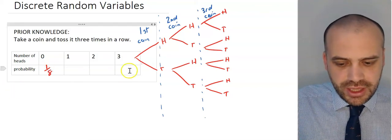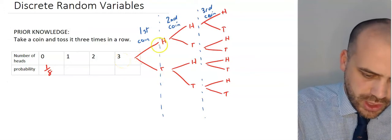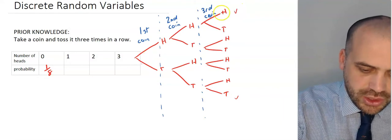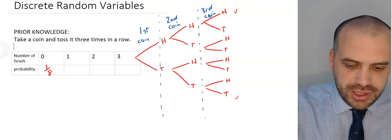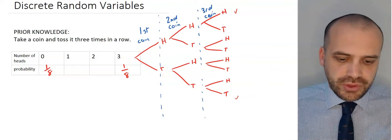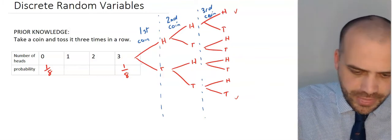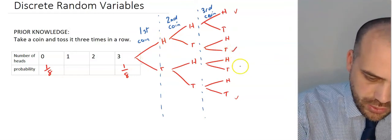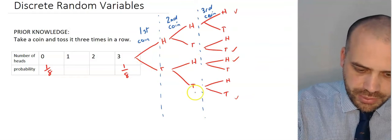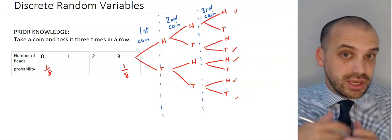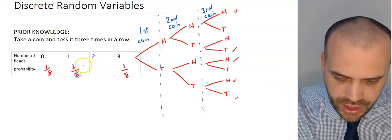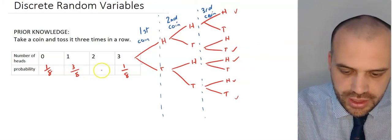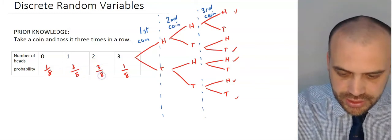The probability of getting three heads — there's only one way to do that, all heads along this line — so the probability is also one in eight. The other two are more interesting. The probability of getting one head happens on three different branches, so that's three in eight. And the probability of getting two heads accounts for the remaining three outcomes, also three in eight.